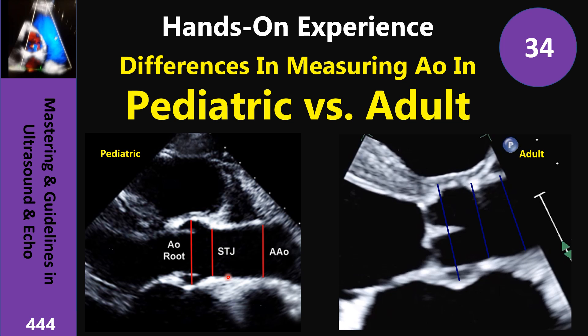Sinotubular junction: inner to inner. And ascending aorta: inner to inner. All three pediatric locations use inner-to-inner measurement at mid-systolic.